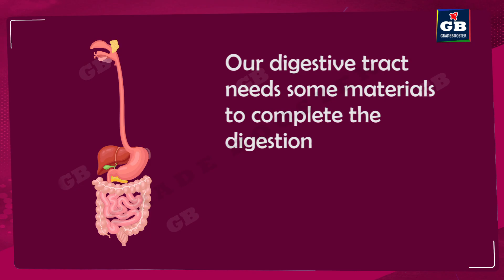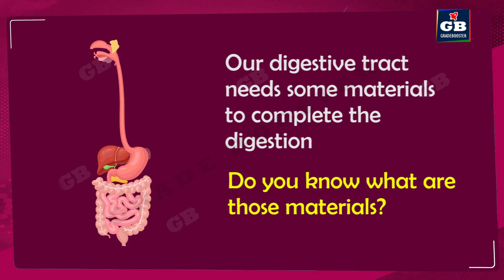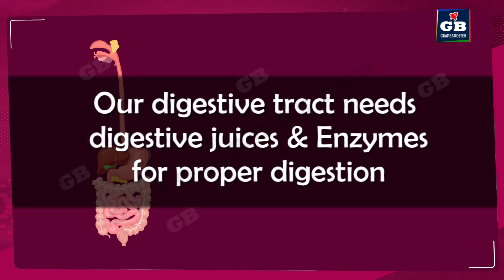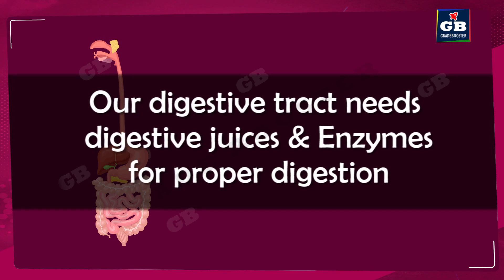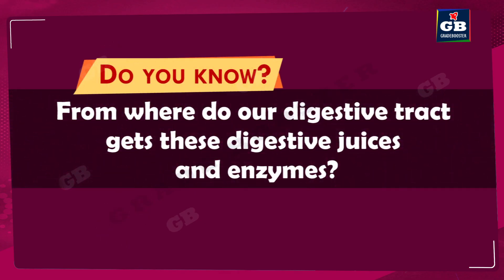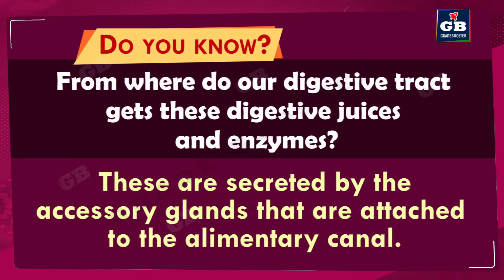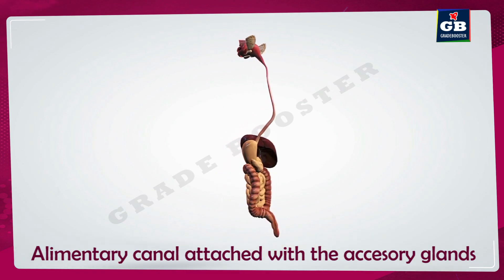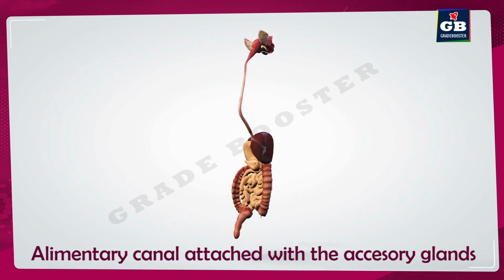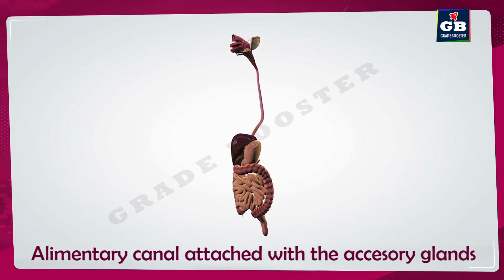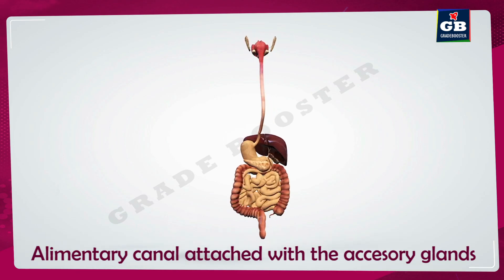It needs digestive juices and enzymes to complete the process of digestion. These enzymes are secreted by the accessory glands that are attached to the alimentary canal. Our digestive tract is also called the alimentary canal. If we look at the picture of the digestive system, we can see that the alimentary canal is attached with many accessory glands.